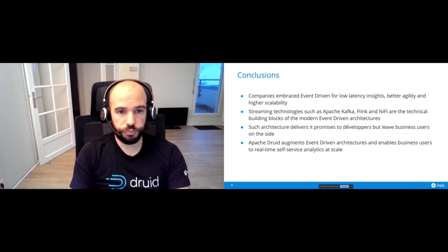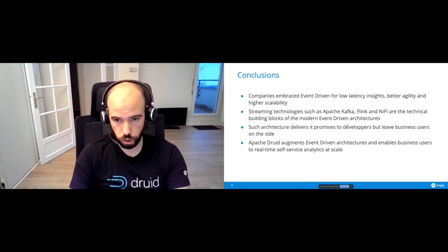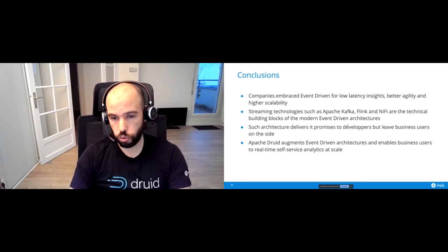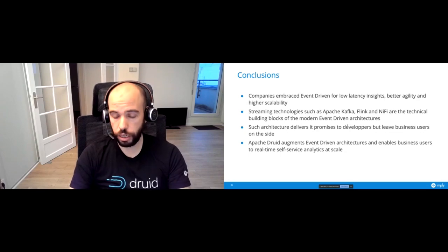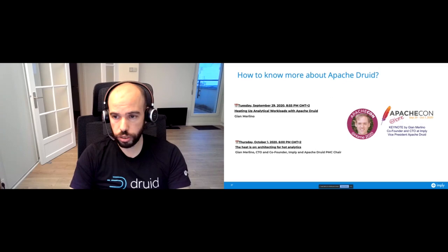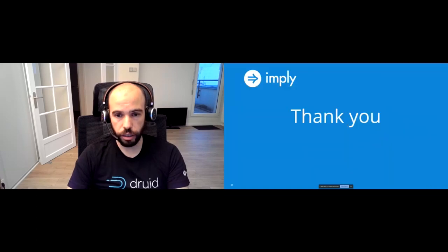In conclusion, many companies today are using event-driven architectures for low-latency insights, better agility, and high scalability, using streaming technologies like Apache Kafka, Flink, and NiFi as their foundation. However, this architecture delivers on its promise for developers while leaving business users on the side. Adding Apache Druid to the equation enables business users and analysts to consume this data in real time in a self-service way and build all the analytics they need. For those wanting to learn more about Apache Druid, there are additional talks available from Gian, the CTO and co-founder of Imply and Vice President for Apache Druid.